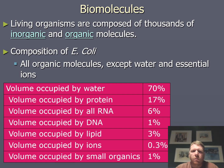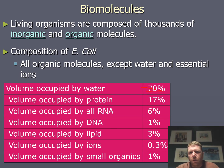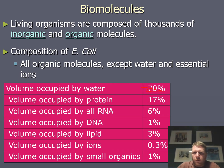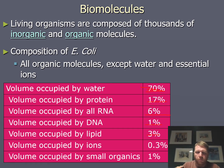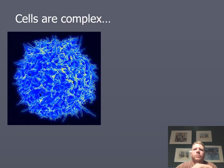Living organisms are composed of thousands of inorganic and organic molecules. Looking at the composition of E. coli by volume, E. coli is largely accounted for by water. Other components include proteins, RNA, DNA, and lipids — which occupy about three percent of volume. These are all the different biomolecules — proteins, RNA, DNA, and lipids — that we'll be looking at this semester.